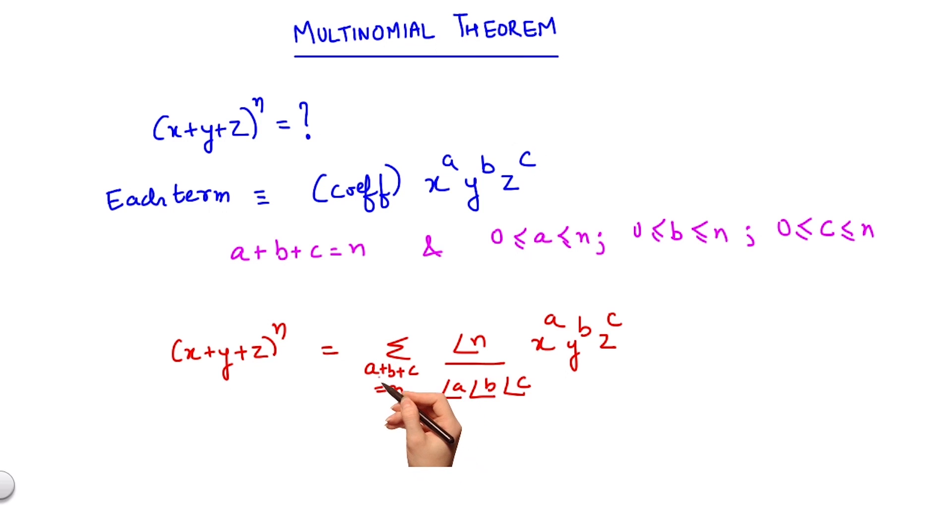So all the possible values that a, b, and c can take such that a plus b plus c equals n and a, b, and c lie between 0 and n will form the terms of this expansion. Let's take an example to see this theorem in practice.